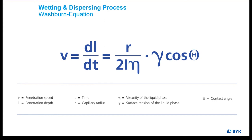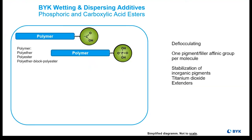And because of this very unique complex structure, these compounds are interface active. Therefore, wetting and dispersing additives migrate to the pigment-binder solution interface and assist in that dispersion. Why is this important? I'll address that as we get into the actual additives themselves.